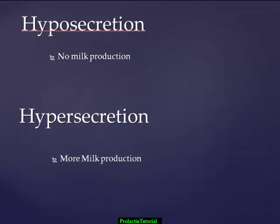Considering hyposecretion and hypersecretion: a hyposecretion means no milk is produced. Even going a very short time period without suckling is enough to completely turn off the lactation process. Females need to be suckled by their offspring at least daily, if not more often, to maintain supply. If a female goes two to three days without suckling, that's enough to dry up the female. Hypersecretion, if there really is such a thing, just creates more milk production. There's never really been a female that's produced too much milk, because milk production must go hand-in-hand with milk expulsion, which involves the oxytocin hormone. This completes the tutorial on prolactin.